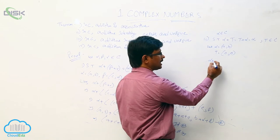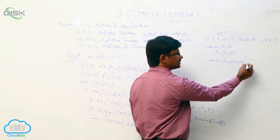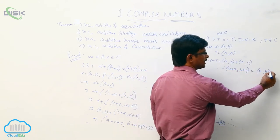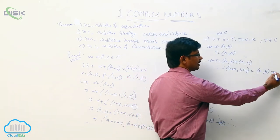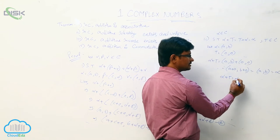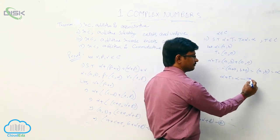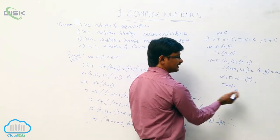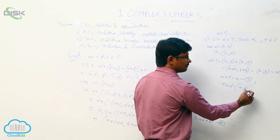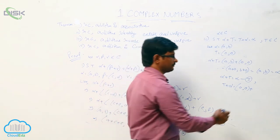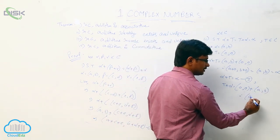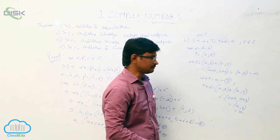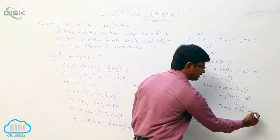Add these two: alpha plus t equals (a, b) plus (0, 0), that is (a+0, b+0), which equals (a, b), which is nothing but alpha. So alpha plus t equals alpha — let this be equation one. And one more, consider t plus alpha. What is t? (0, 0) plus alpha (a, b). If you add these two, we get (0+a, 0+b), that is (a, b), which is again alpha. So t plus alpha equals alpha — let it be equation two.